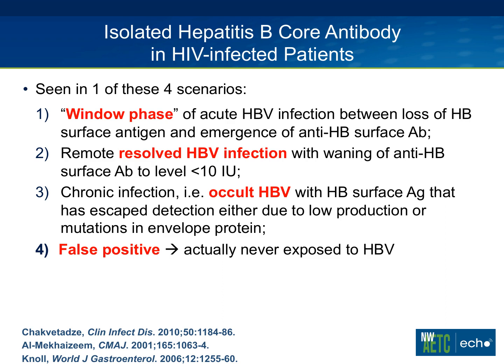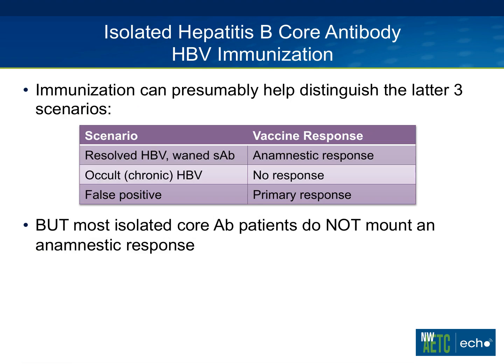The fourth scenario is that the isolated core antibody is simply a false positive, and the patient has never actually been exposed to hepatitis B. In our HIV population, one can argue this is less likely to be a false positive given the risk factors of our population. But also keep in mind there is some degree of immune dysregulation and B cell stimulation in HIV, so false positives are not out of the realm of possibility.